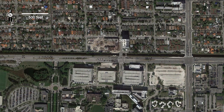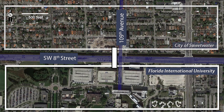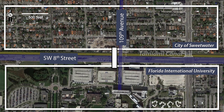The Florida International University pedestrian bridge was located on the west side of the intersection of Southwest 8th Street and 109th Avenue. The elevated pedestrian bridge would have connected the university with the city of Sweetwater by extending over Southwest 8th Street and the parallel running Tamiami Canal.